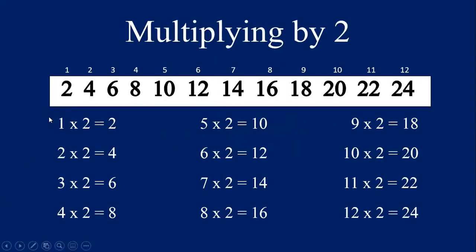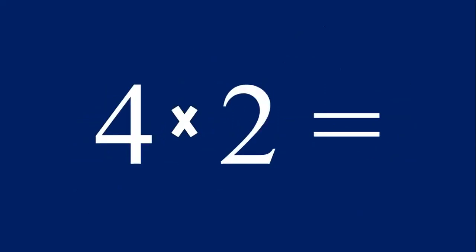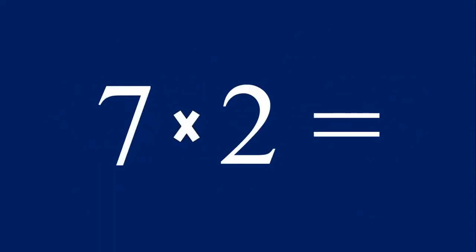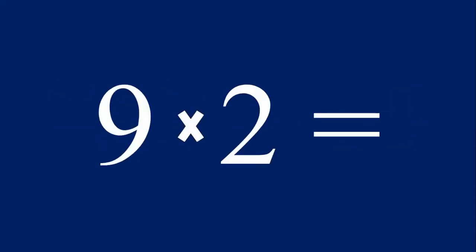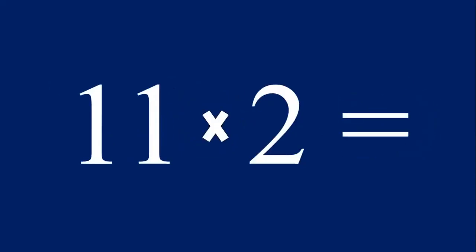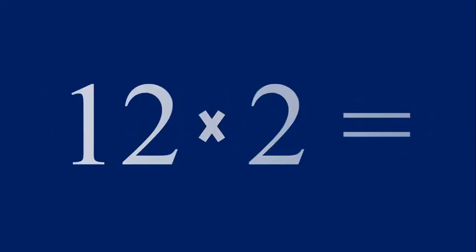Now let's practice multiplying one through 12 by the number two. One times two equals two, two times two equals four, three times two equals six, four times two equals eight, five times two equals 10, six times two equals 12, seven times two equals 14, eight times two equals 16, nine times two equals 18, ten times two equals 20, eleven times two equals 22, and 12 times two equals 24.